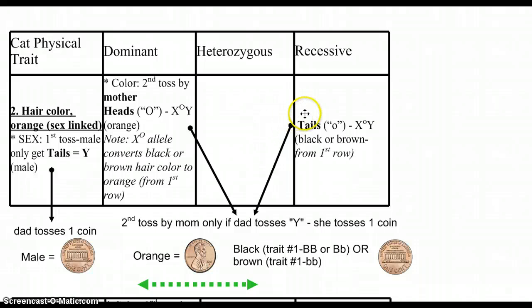Now here's where it starts getting a little confusing. For the second trait, so now we're going to throw the coins for the second trait. Just move down the table as you throw the coins. Hair color. Orange is a sex-linked trait. Which means it's going to be carried on the X allele.